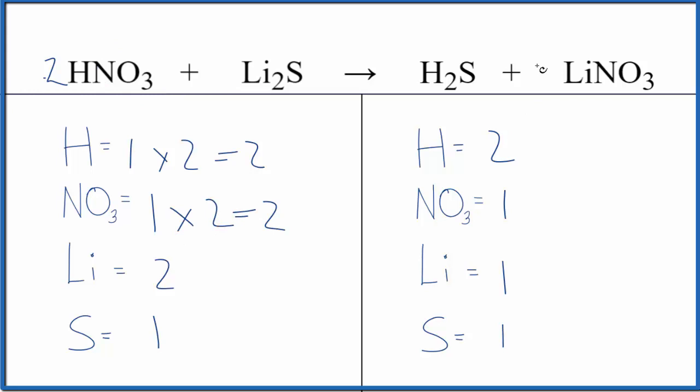Let's put a two in front of the lithium nitrate because we have one lithium times two. That would balance the lithiums. And then we have the one nitrate times two. That would balance the nitrates. And we're done. This is the balanced equation for HNO3 plus Li2S.